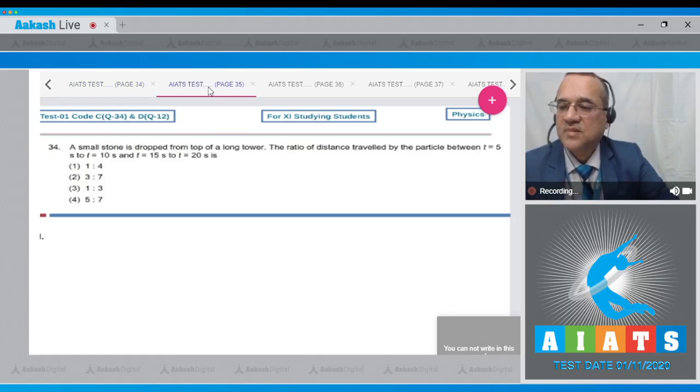Question number 34, the question says that a small stone is dropped from the top of a long tower, the ratio of the distance traveled by the particle between t equals 5 second to t equals 10 second, and from t equals 15 second to t equals 20 second is, these are the four options given. A stone is dropped from here, and downward direction I take as positive acceleration as g, and it is dropped from here with u to be 0.